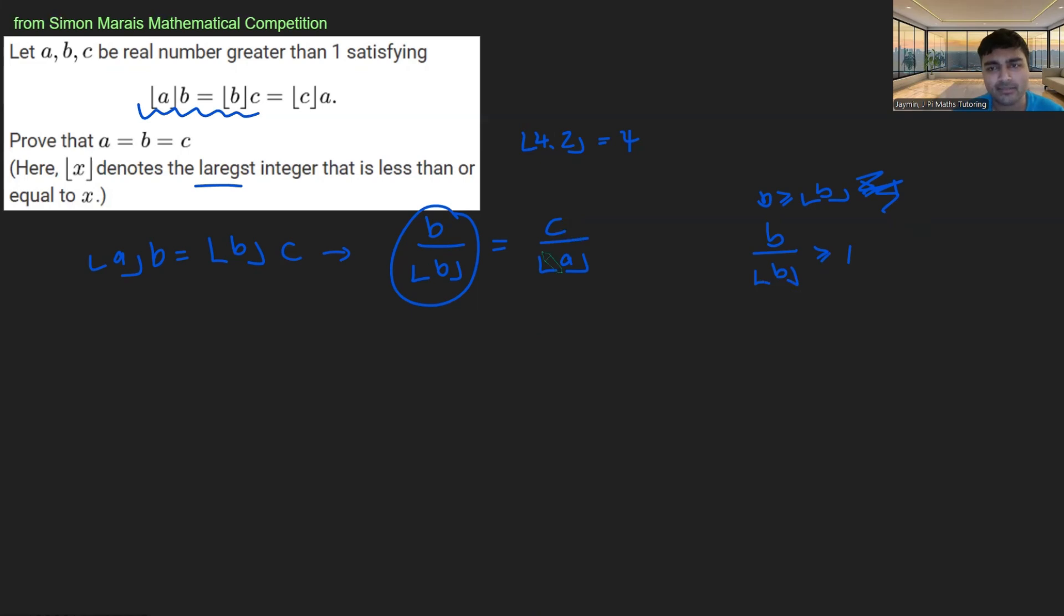Great. And so that means because these two things are equal, I get that C over floor of A is at least one. And so therefore, C is at least floor of A.